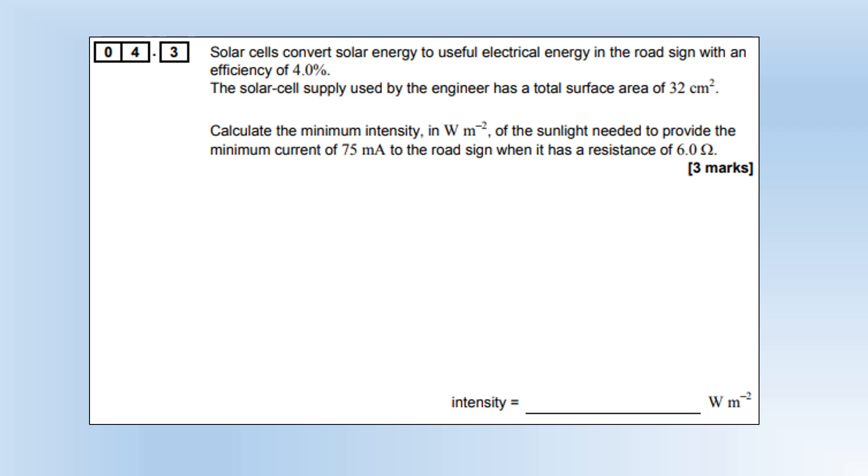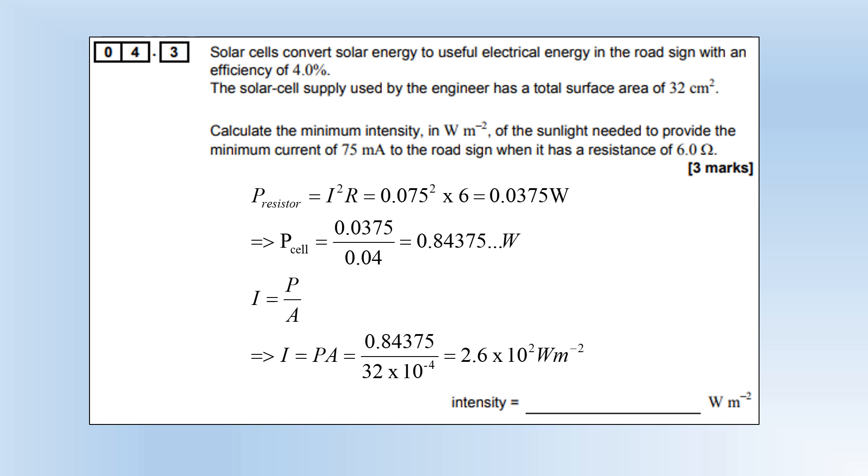Solar cells convert solar energy to electrical energy with an efficiency of 4 percent. The solar cell supply used by an engineer has a total surface area of 32 cm². Calculate the minimum intensity in watts per meter squared of the sunlight needed to provide the minimum current of 75 milliamps when its resistance is 6 ohms. First, we can work out the power needed by the resistor using the current and the resistance. That then represents 4 percent of the energy we need to be input. If we divide that by 0.04, we need a total power of 0.84 watts from the solar cell. Intensity is power per unit area; we know the power, we need to convert the area into meter squared, giving us 2.6×10² watts per meter squared of intensity.